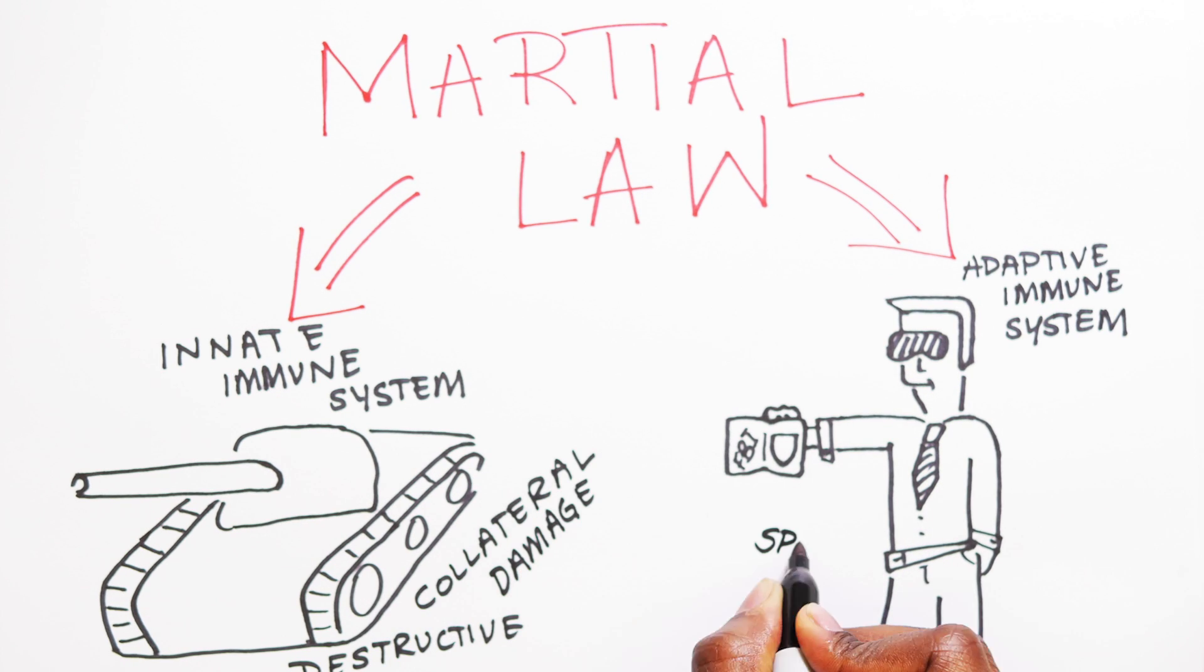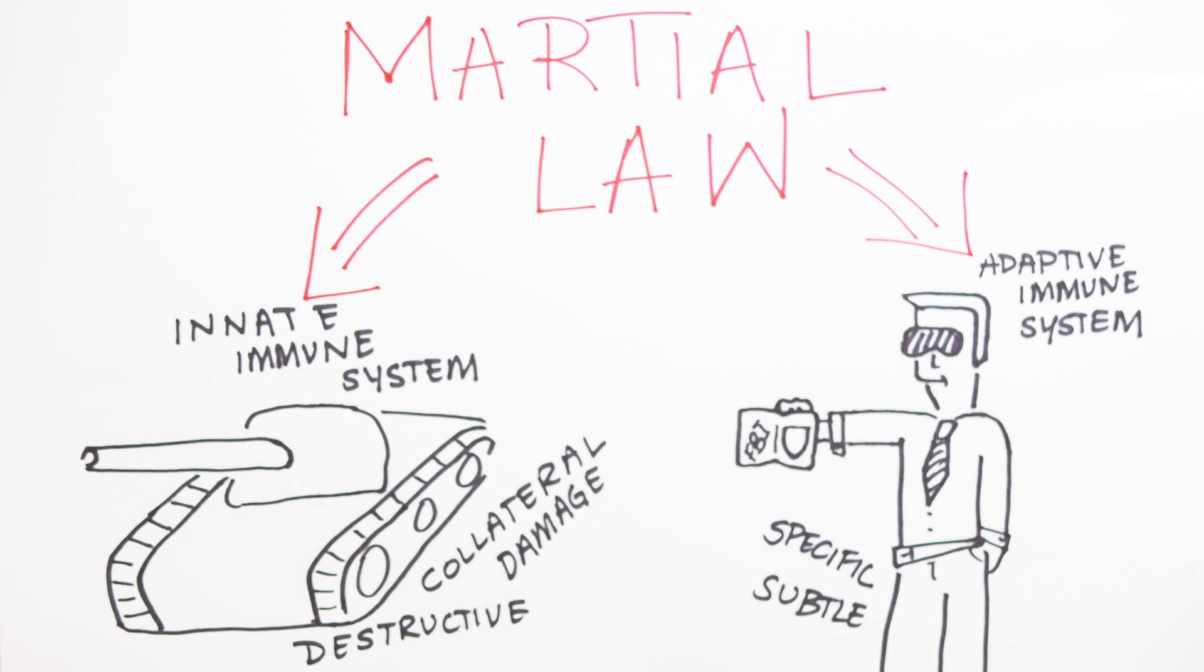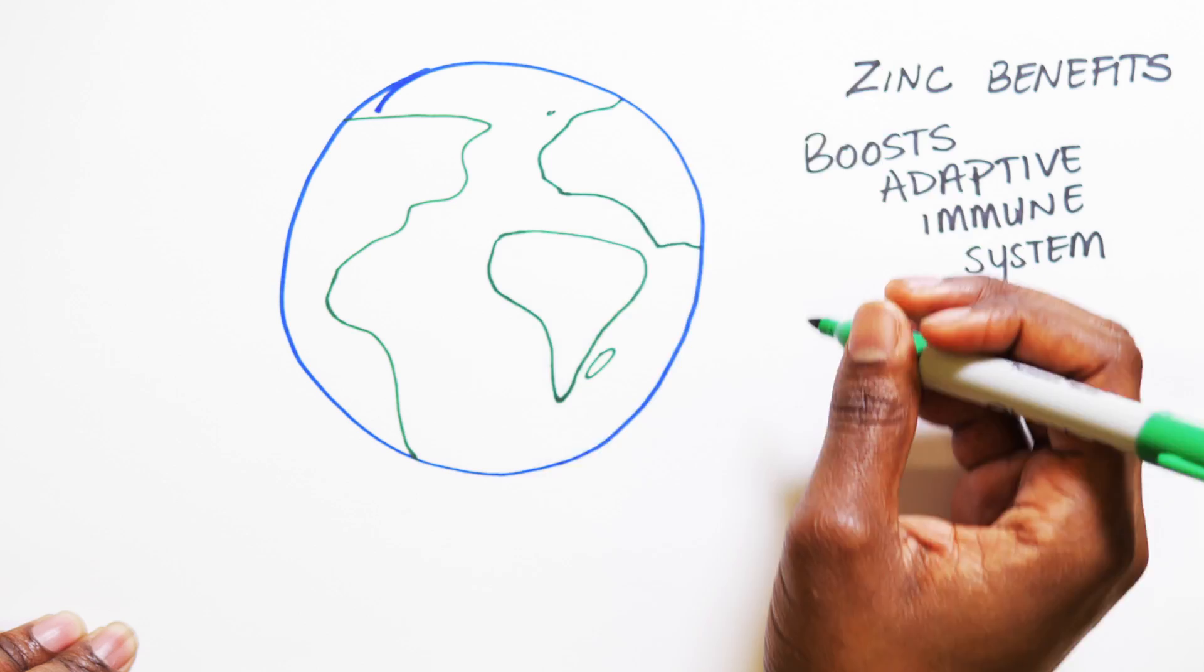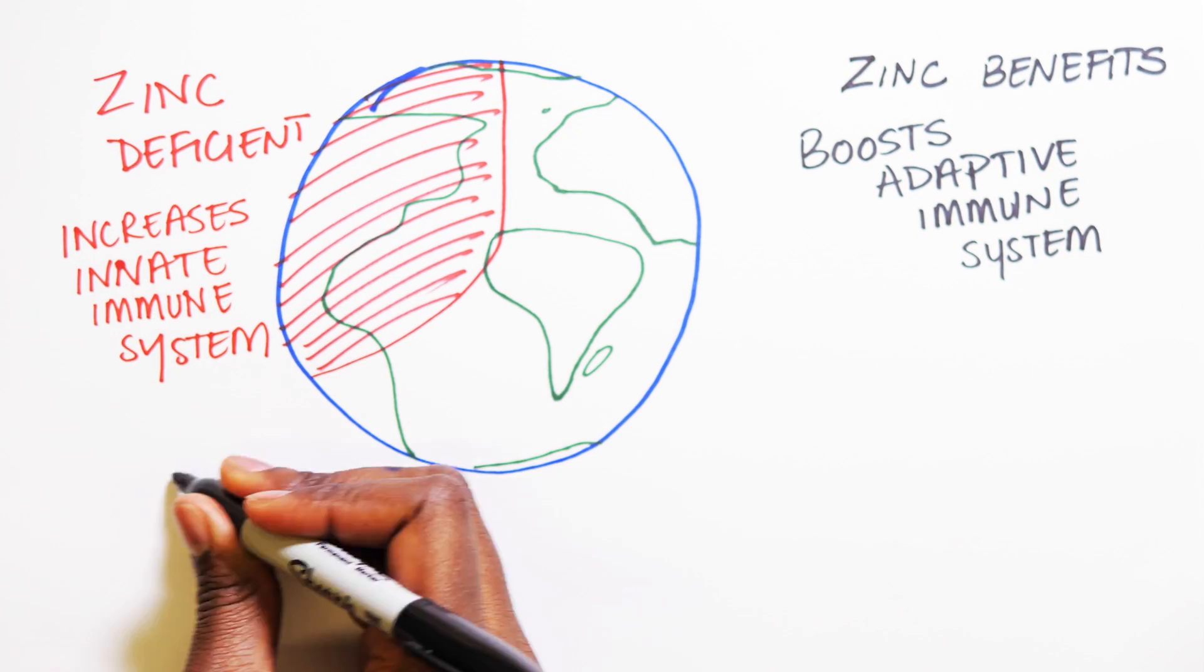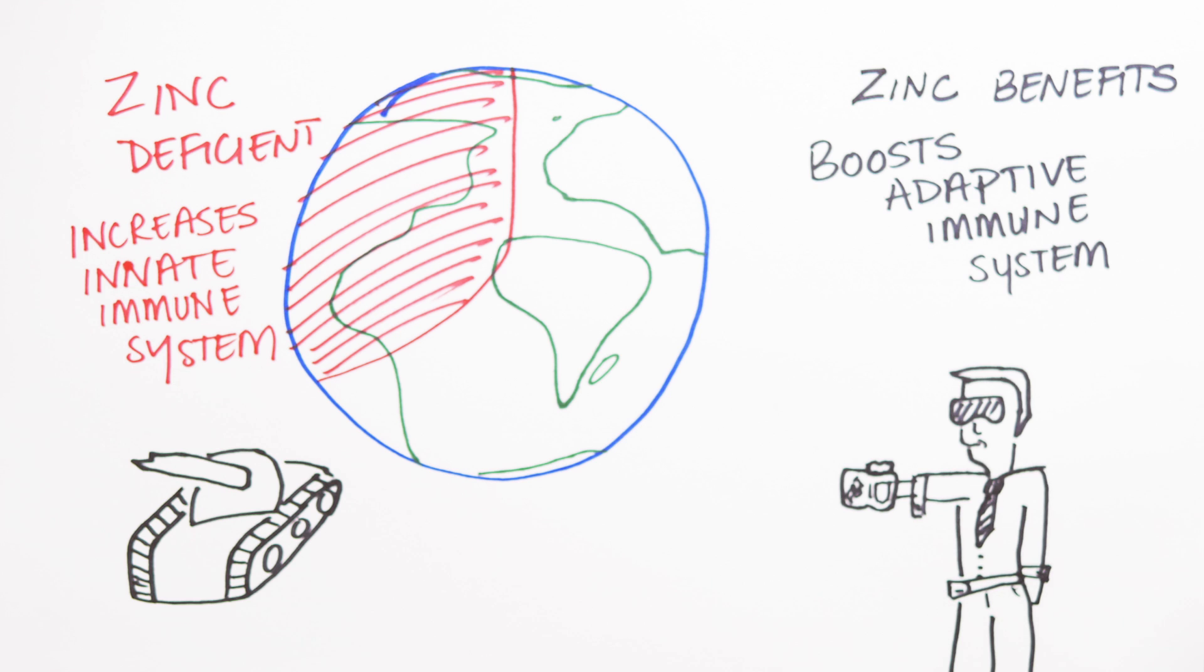But you also have the adaptive immune system, which is much more subtle and specific. Evidence suggests that your diet can affect the balance between these two immune systems. For example, being deficient in the micronutrient zinc seems to disable your adaptive immune system and increase your innate immune system's response. This is hugely important because over a third of the world's population is deficient in zinc.